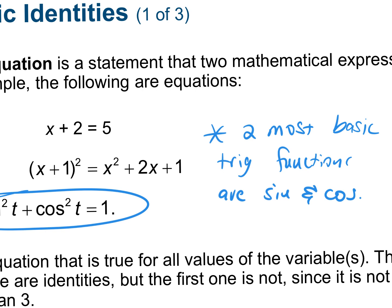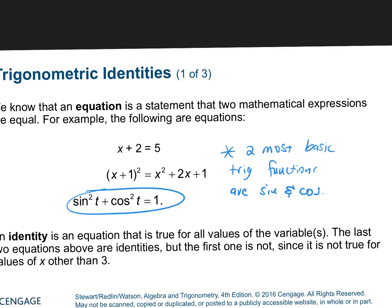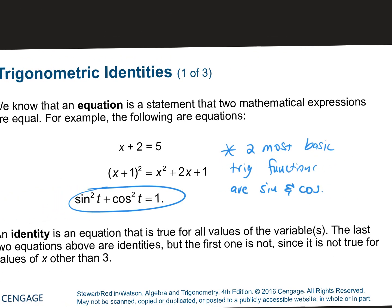You guys remember those two-column proofs in geometry? We're going to get to doing two-column proofs with trig identities — it's a trigonometric proof. This is the hardest stuff we do all year.